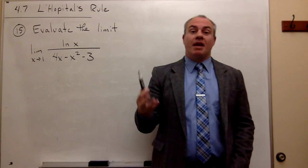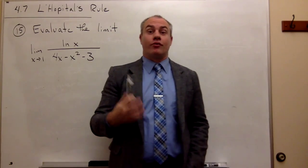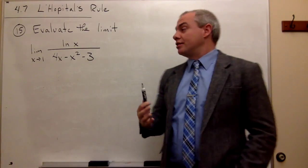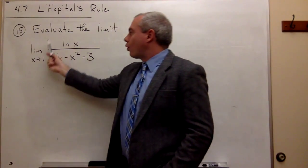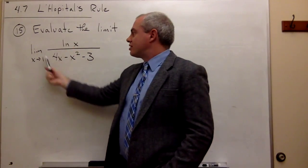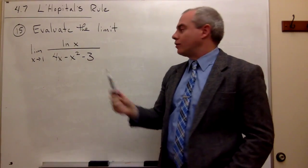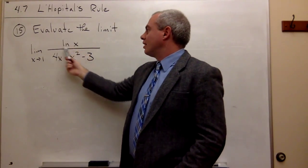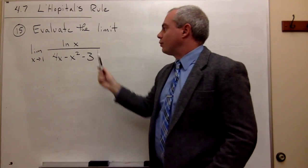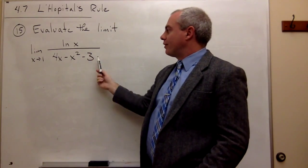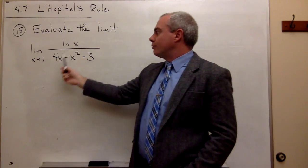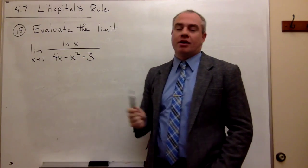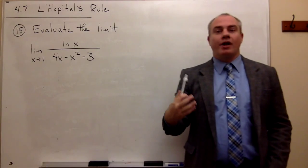what is the form of this rational function, or this function divided by another function. We've got a numerator, we've got a denominator, and if I plugged in 1 to the numerator and I plugged in 1 to the denominator, what would I get out?